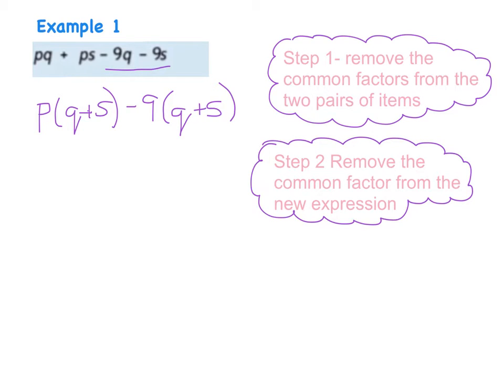And so this is a common factor so let me place that down there q plus s. But also if I look at my answer I'm saying well p is common to this and so is minus 9 so that is also a common factor. And that's the sum finished.